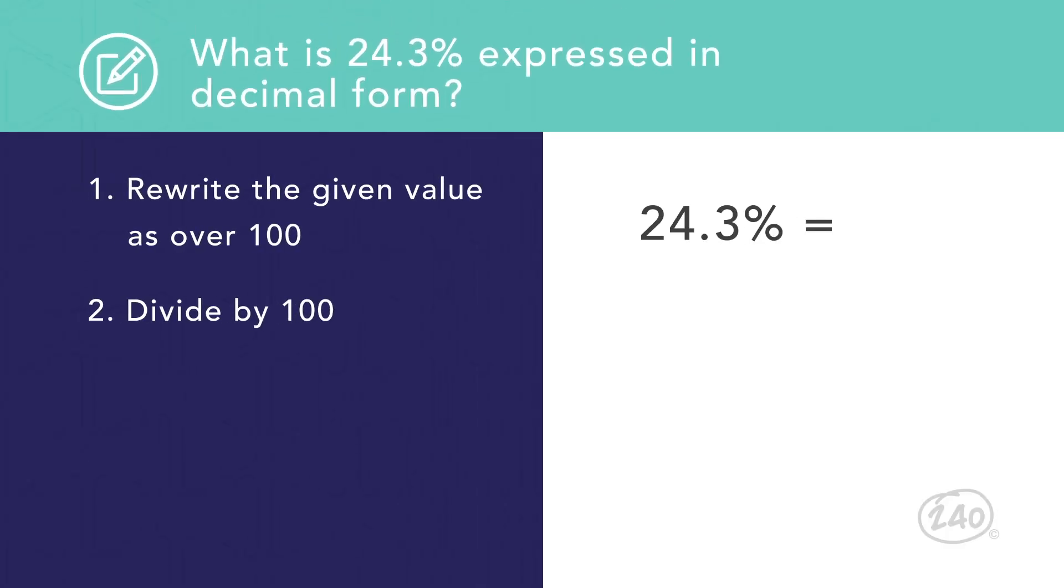Let's try another one. How can 24.3% be written in decimal form? Again, we start by rewriting the percentage as a fraction with a denominator of 100. In this case, we get 24.3 over 100.